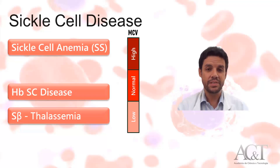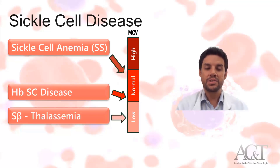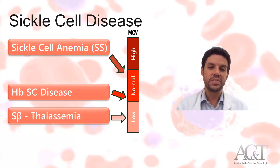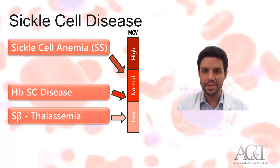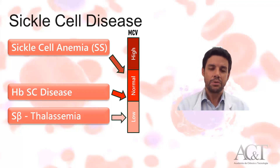Another interesting difference concerns the MCV — the mean corpuscular volume — which for patients with sickle cell anemia shows within the normal range. These patients usually have a normocytic and normochromic anemia. Patients with hemoglobin SC disease also present a normocytic anemia, but the MCV is generally close to the lower limit of normality.